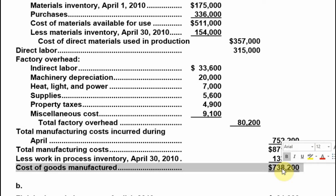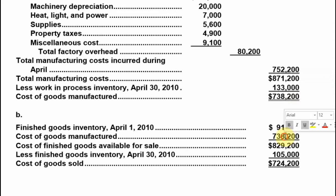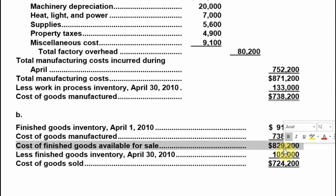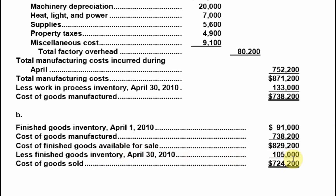The cost of goods manufactured figure flows into the finished goods section. We have finished goods inventory at the beginning of ninety one thousand, plus seven hundred thirty eight thousand two hundred cost of goods manufactured, giving us cost of finished goods available for sale. We then subtract finished goods ending inventory of one hundred five thousand.